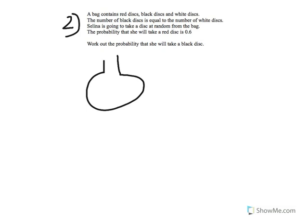Okay, so the second question says that there's a bag containing red, black, and white disks. The number of black disks is equal to the number of white disks, so let's say 2 black disks and 2 white disks. The probability of picking a red disk is 0.6. We'll call the probability of taking a black disk out of the bag x, and the probability of taking a white disk out of the bag y.